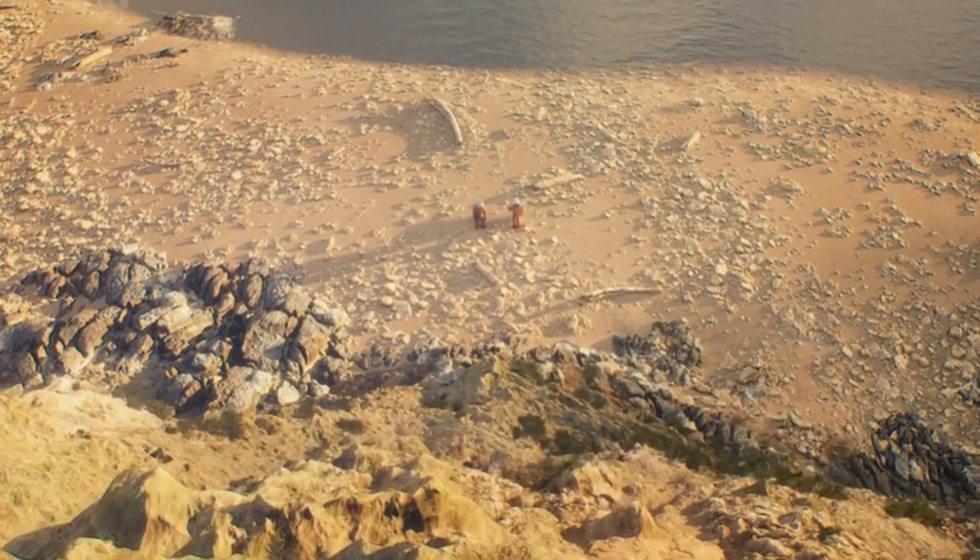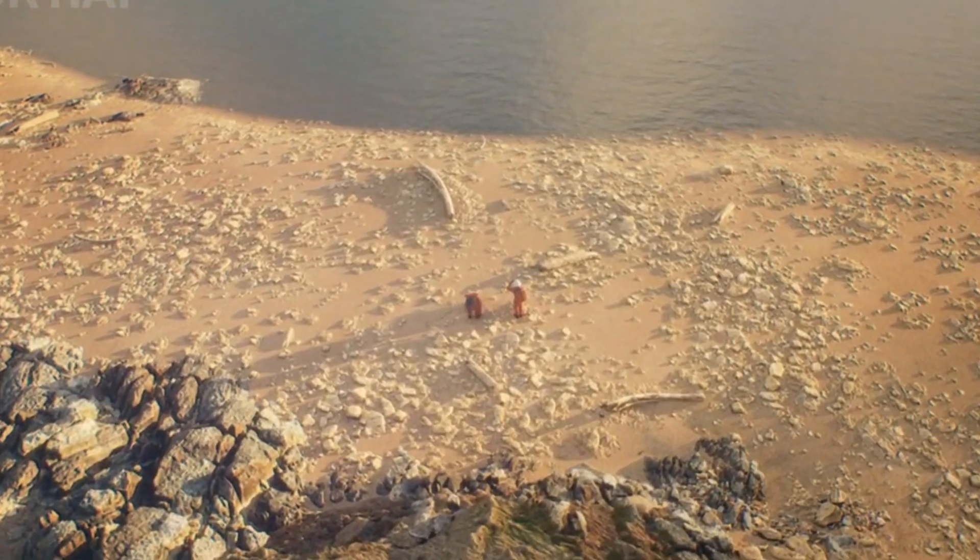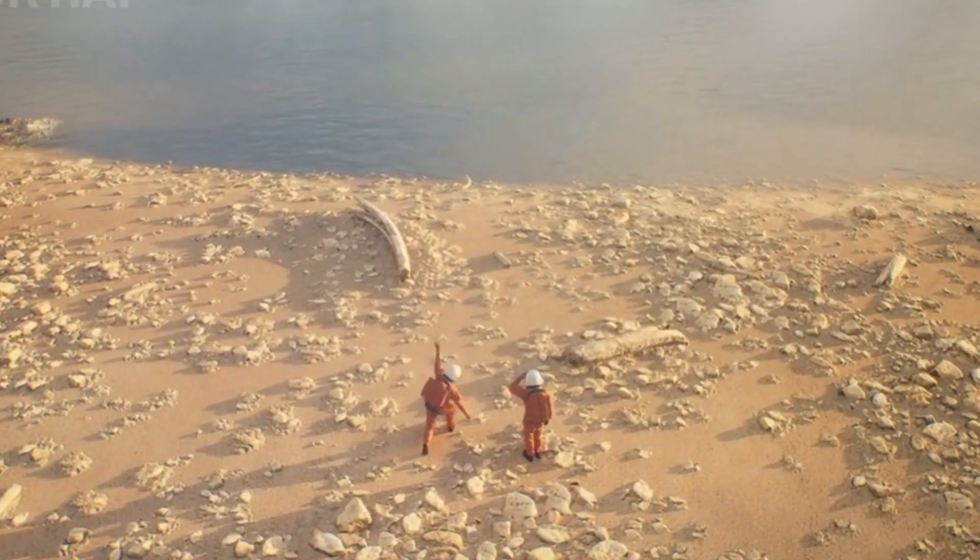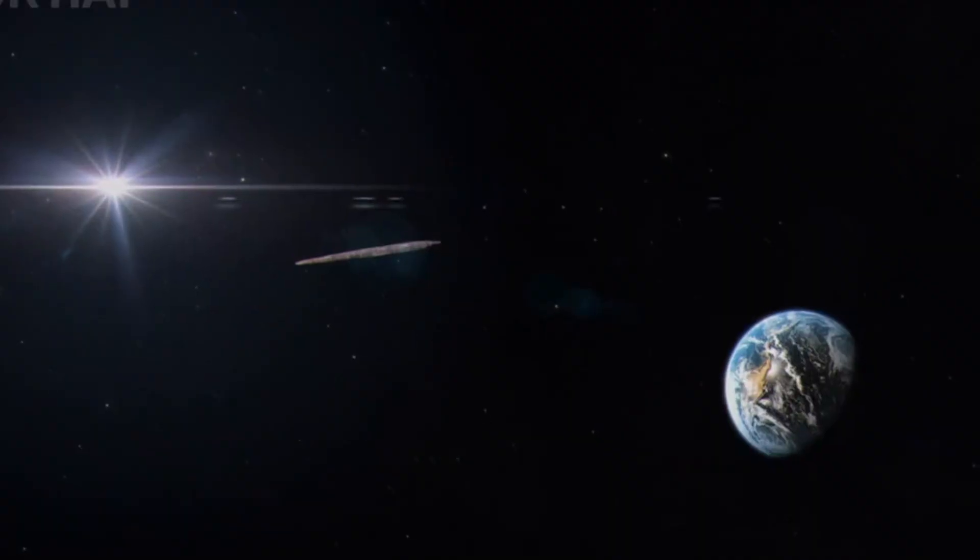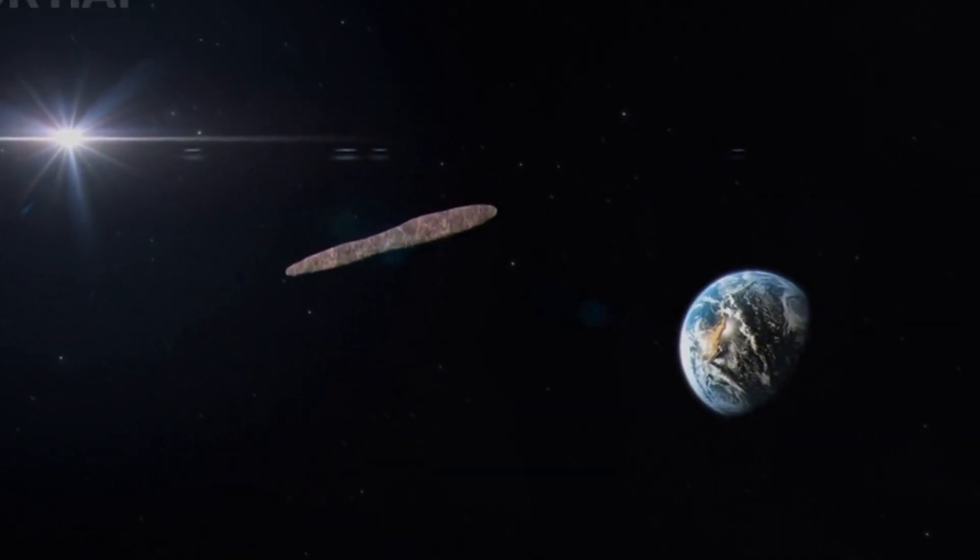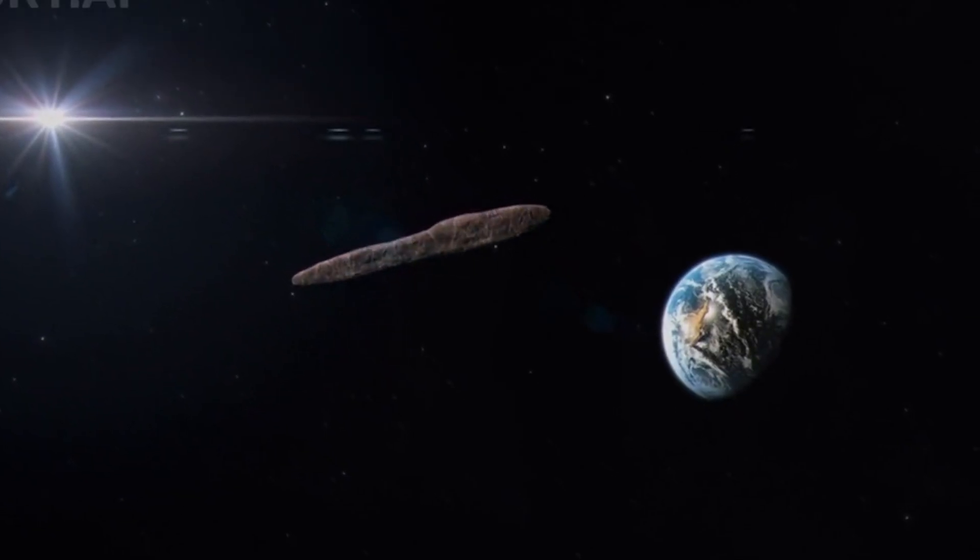In the vast, uncharted reaches of space, an enigmatic visitor has piqued the curiosity of people and perplexed scientists across the globe. This mysterious object, known as Oumuamua, sparked a whirlwind of questions when it made its first appearance in our solar system.